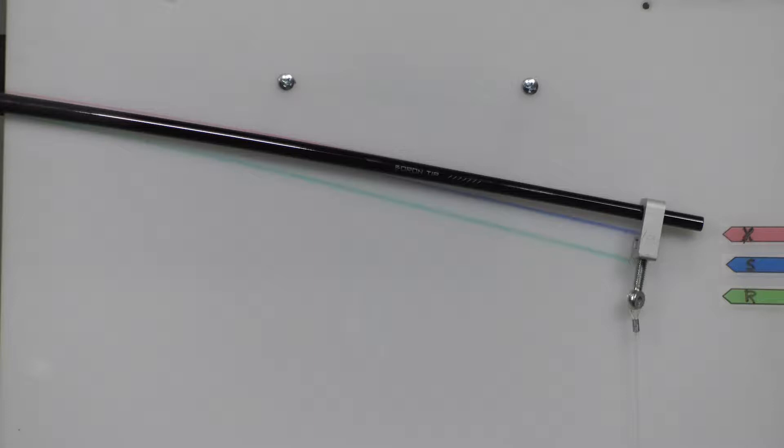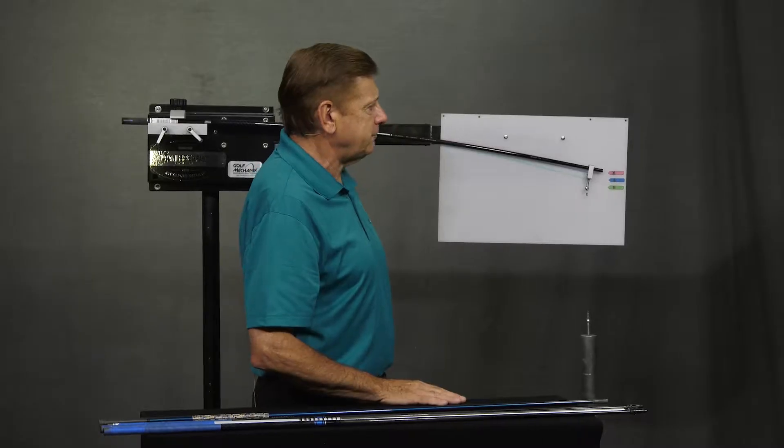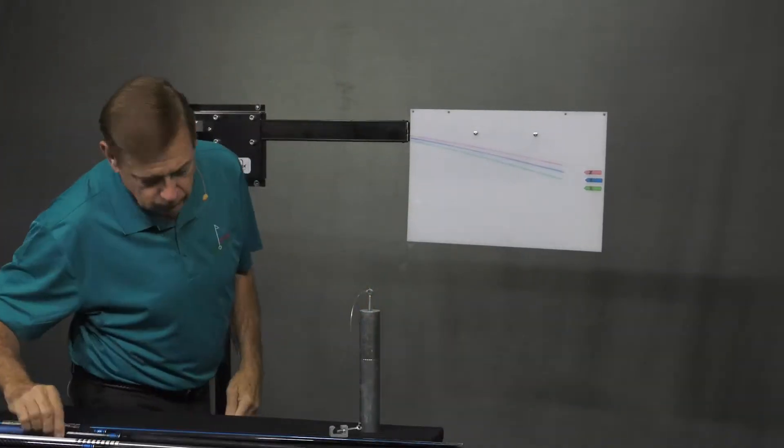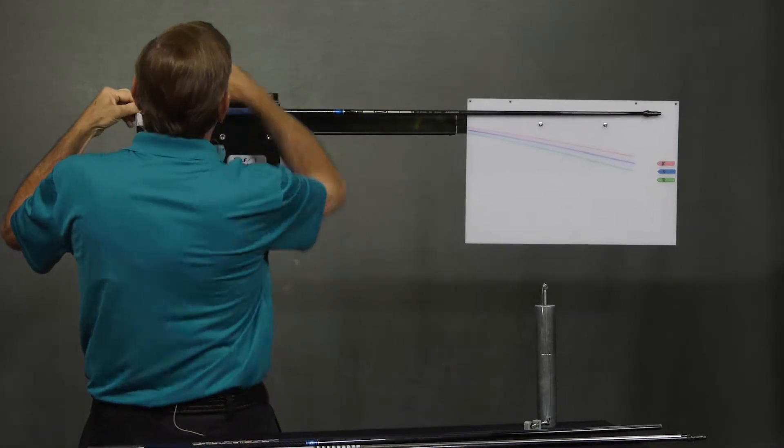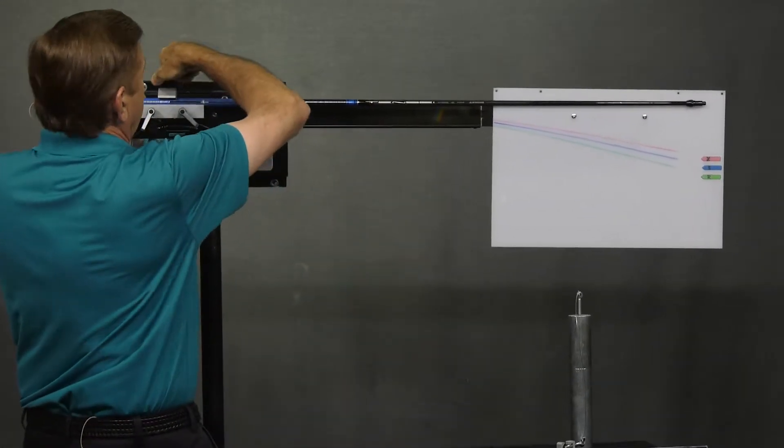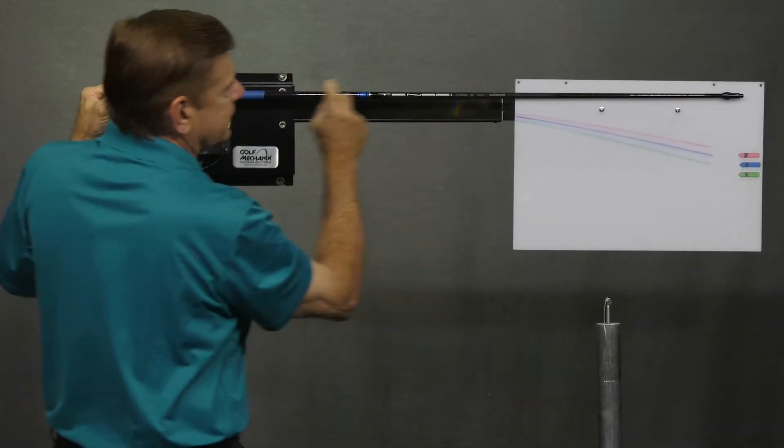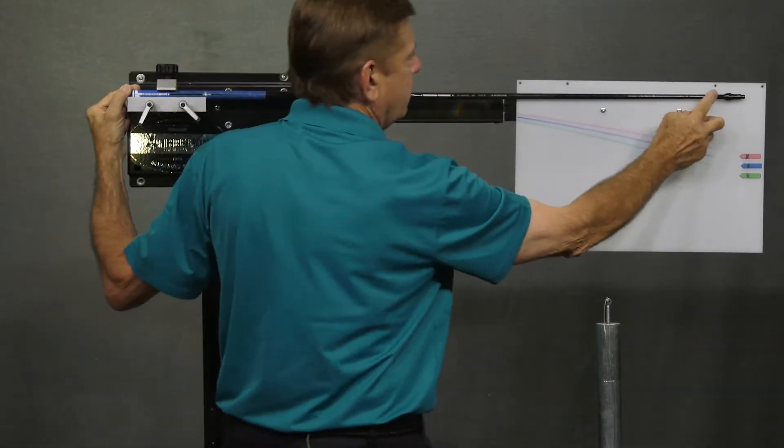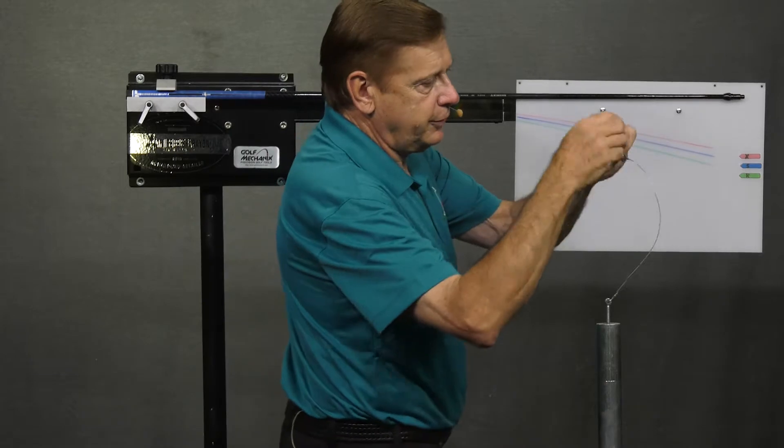Now I'm going to change the shaft and put on an S-Flex shaft. What's important as you do this is that you maintain what I would call the beam length. There's a section from this part of the clamp to the tip where you're going to apply the weight.